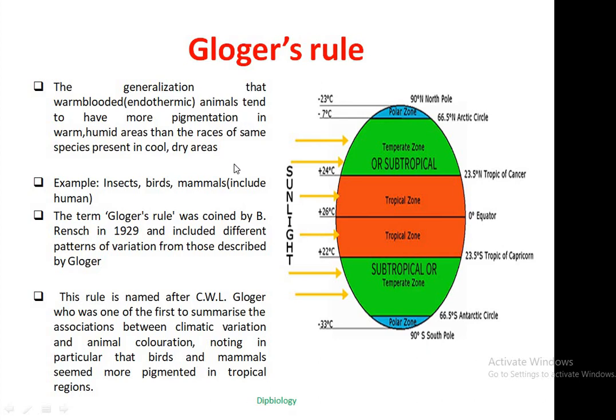We know that temperature is one of the most important abiotic factors of the environment. It has great influence on living beings including animals and their pigmentation. On the basis of temperature availability in different geographical regions, individuals of the same species or same race have different pigmentations in different geographical areas. Gloger's Rule is an ecological rule.